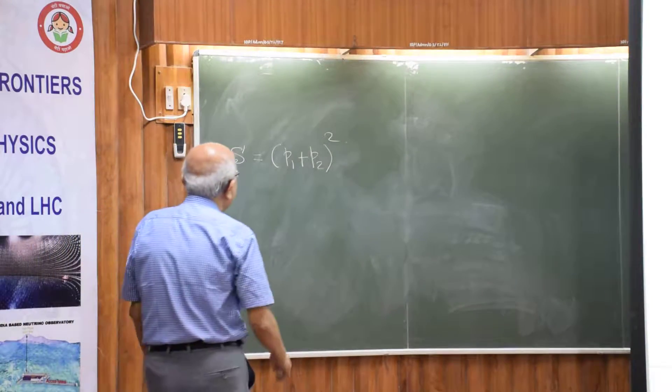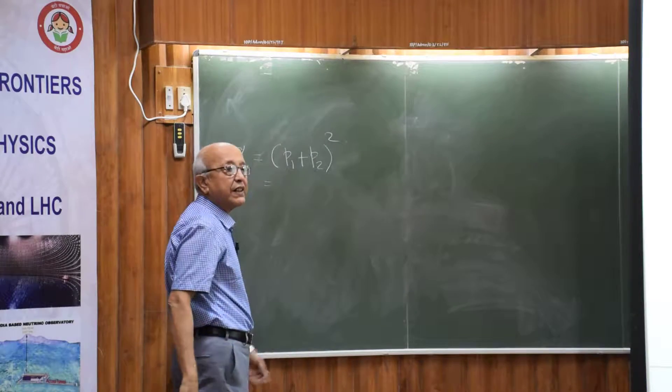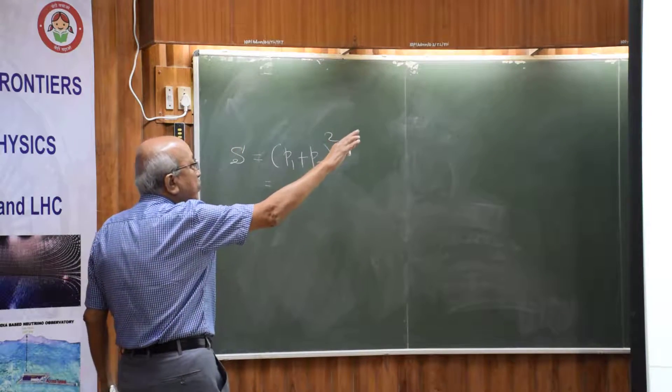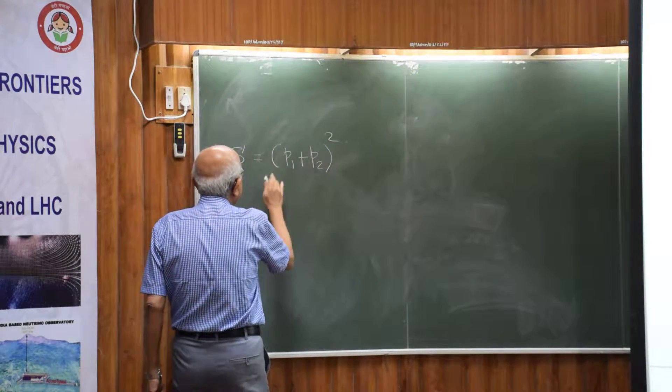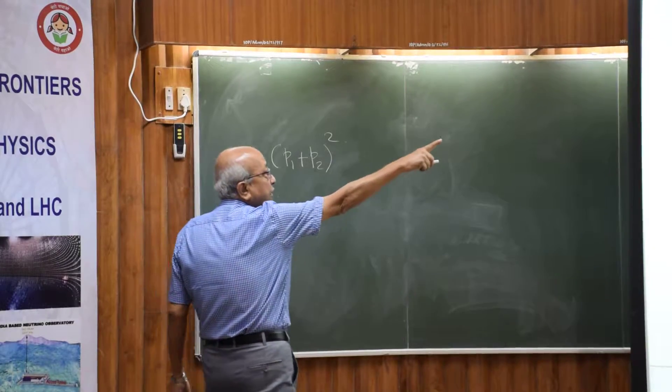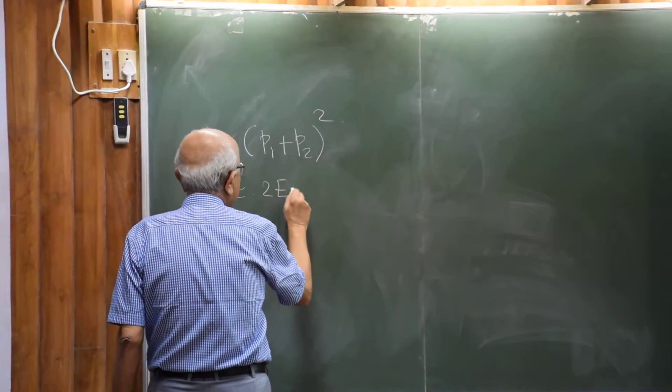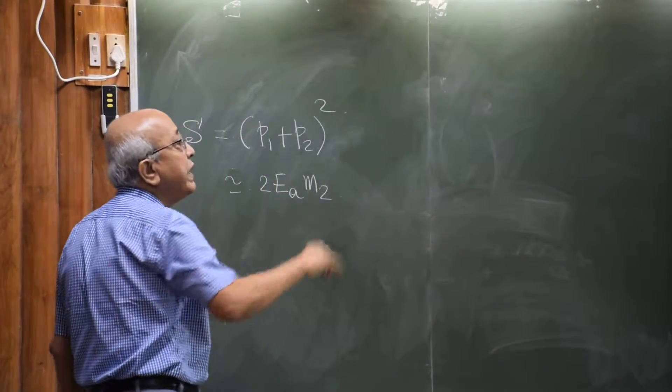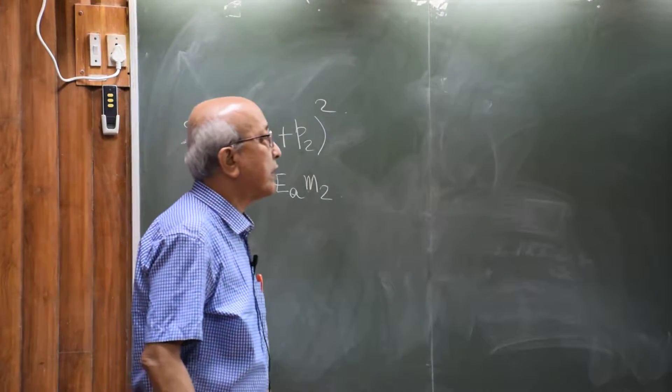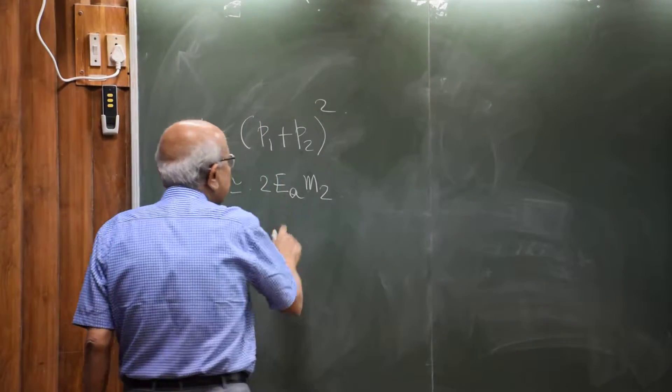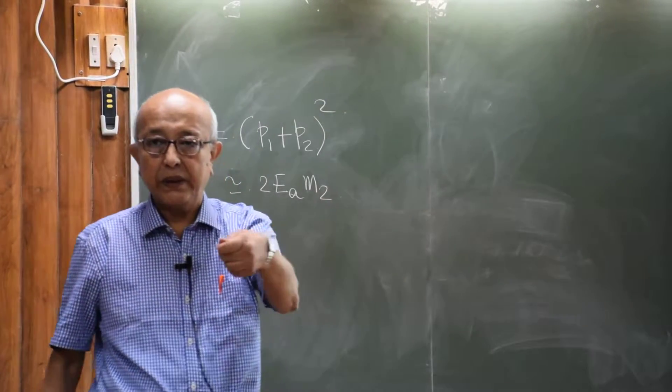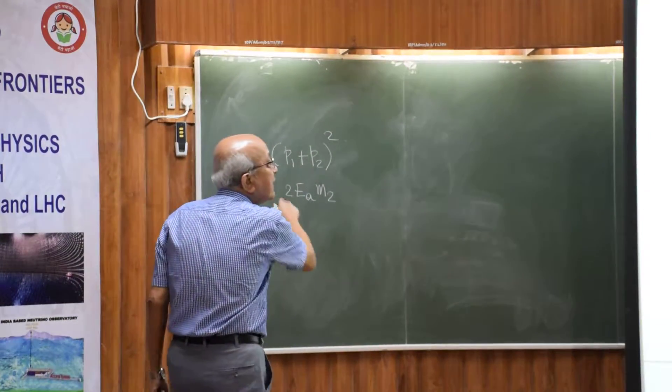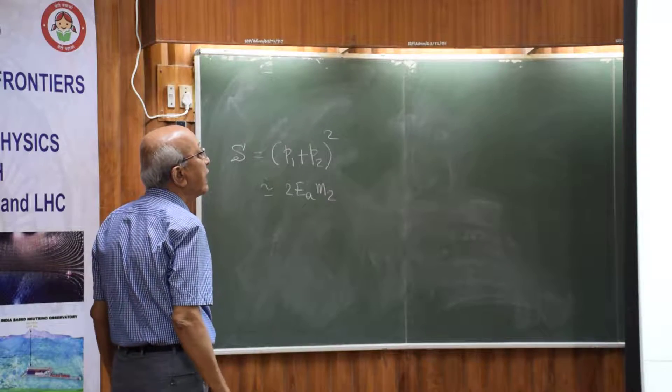And if you calculate it in the lab frame and neglect the proton mass - that is, drop p squared, etc. - then you will find that at the end of the day, if you neglect the proton mass, this S turns out to be... I am sure everybody knows this. And suppose there it is mb - it is basically the target mass - and Ea is the total energy of the beam, that is the particle which is accelerated to hit. So you see that this is the quantity.